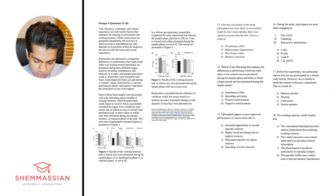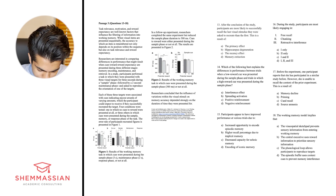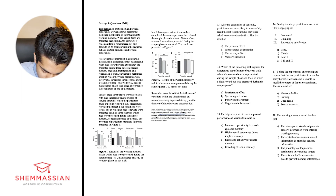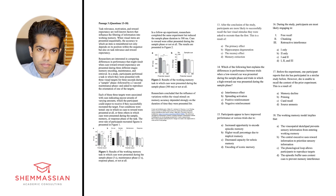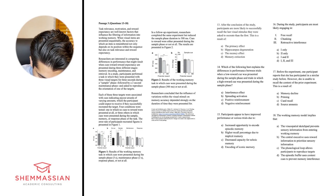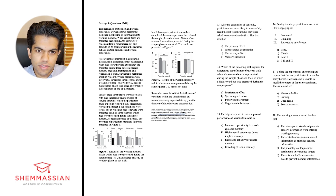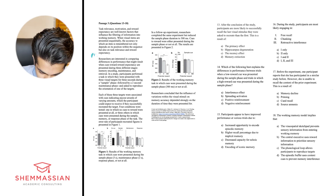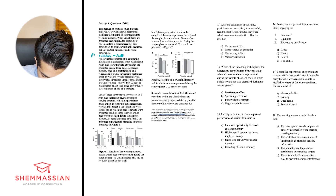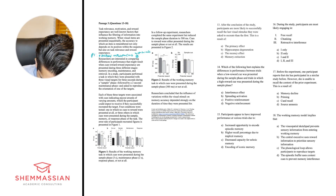A lot of things here tie back to what I reviewed during my content review phase. Things like task relevance, motivation, and reward expectancy all really stick out with topics from memory and motivation. If I was highlighting, I might highlight some of those. But since I'm going the outlining route, I'll summarize this paragraph as noting the factors influencing working memory.